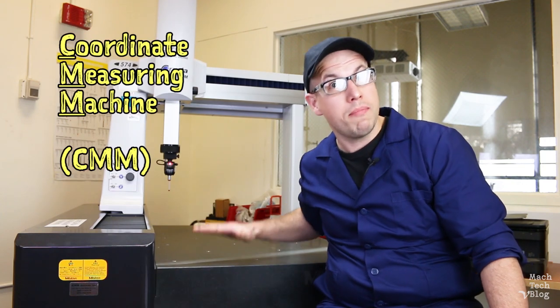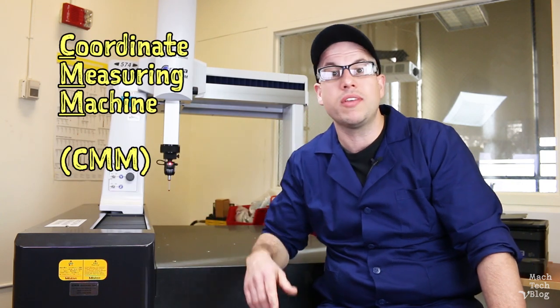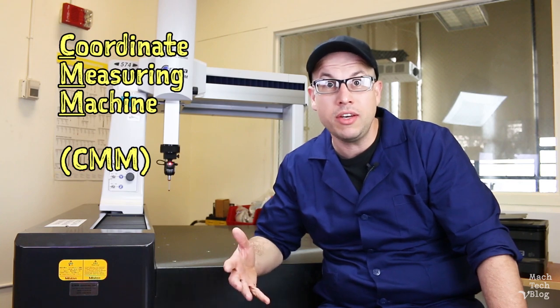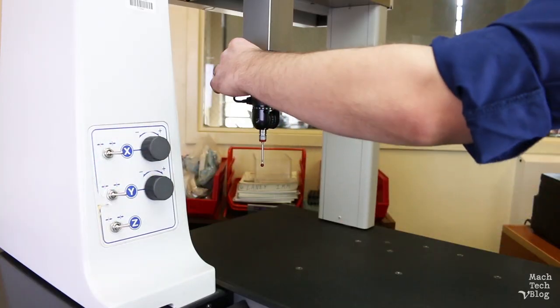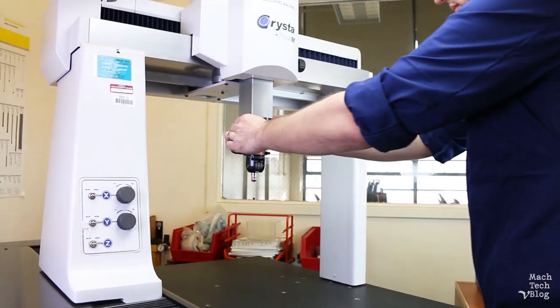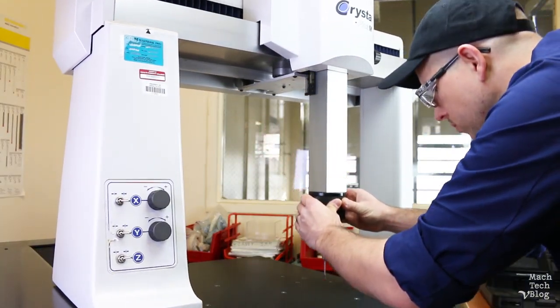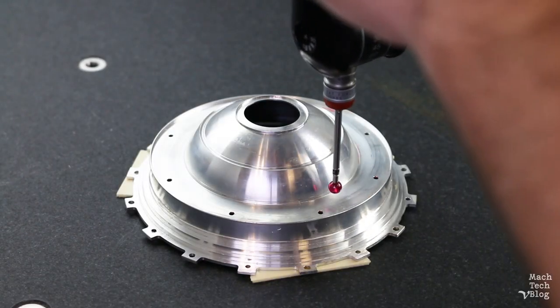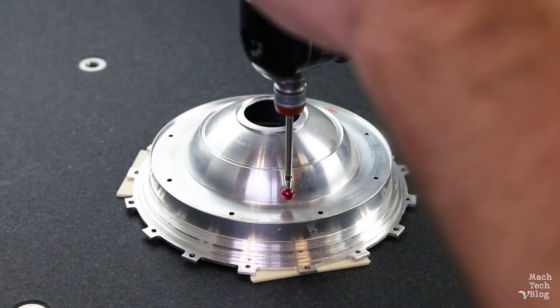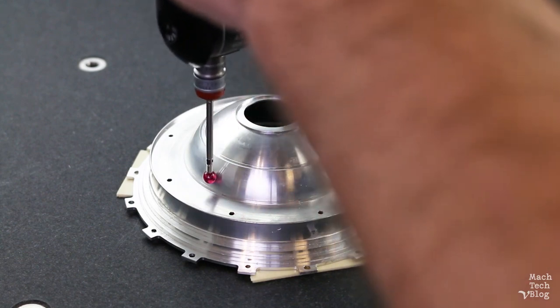And of course, there's the coordinate measuring machine, which at this point is a common fixture in the modern machine shop. These machines can achieve their high positional accuracy in large part because they ride on air bearings and granite guideways. The moving components are floating on a thin, stiff cushion of air with smooth, near frictionless motion over super-flat surfaces.